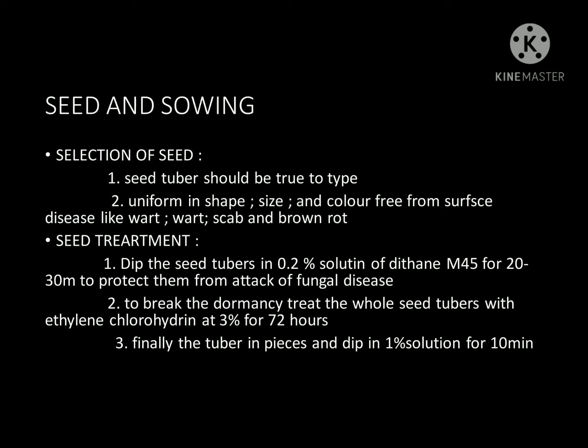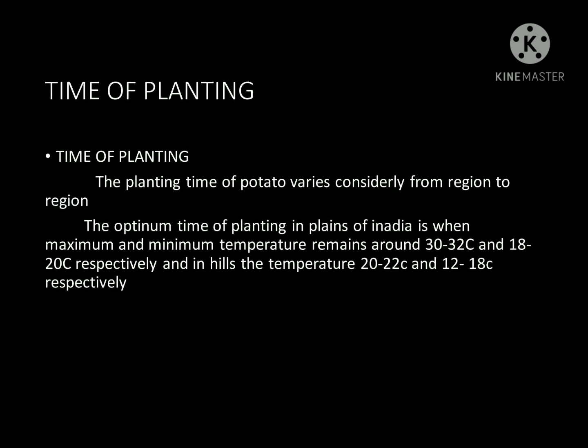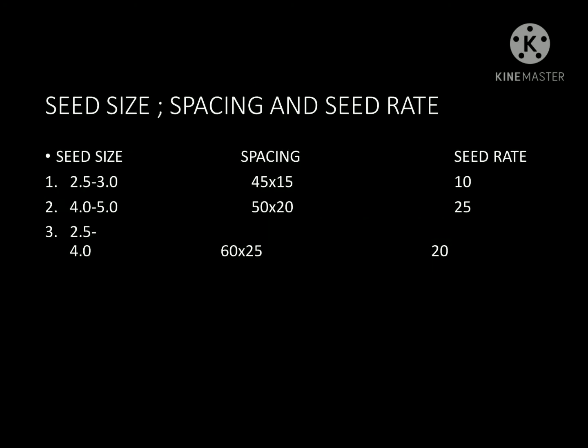Finally, dip the tuber in a 1 percent solution for 10 minutes. The planting time of potato varies from region to region. The optimum time of planting in the plains of India is when maximum and minimum temperatures remain around 30 to 32 degrees Celsius and 18 to 20 degrees Celsius respectively. In hills, the temperature of 20 to 22 degrees and 18 degrees respectively is optimum.